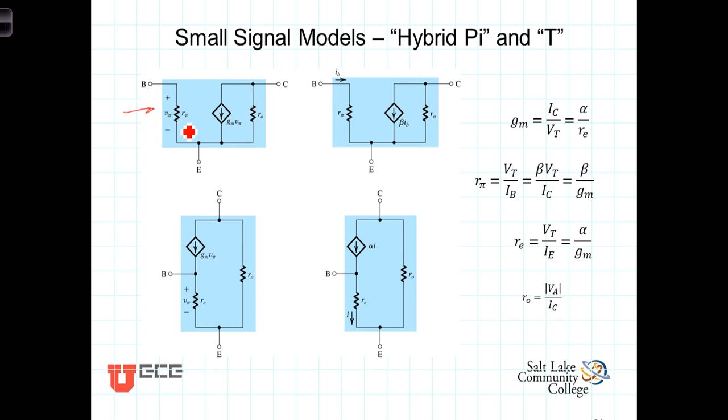And R sub pi is still relatively large but not infinite, equal to beta divided by G sub m.